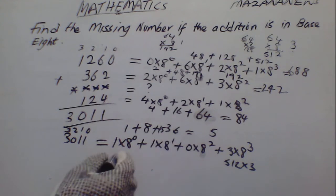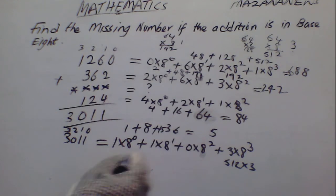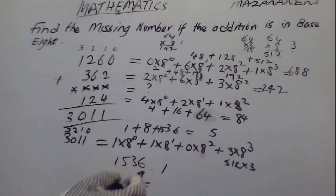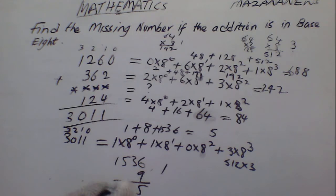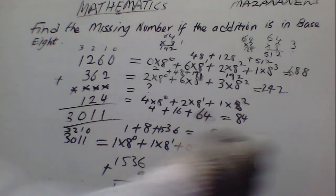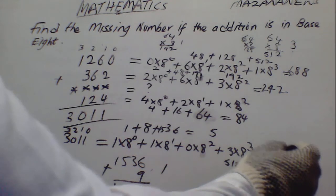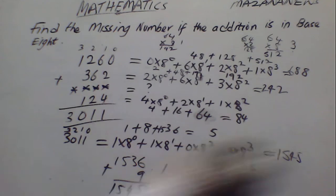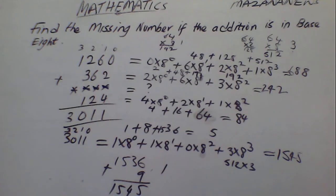Now do the addition again. 15, 36. This plus this gives us 9, carry 1. So you put it here — 4, 51. When you do the addition, in this case we have 15, 45.